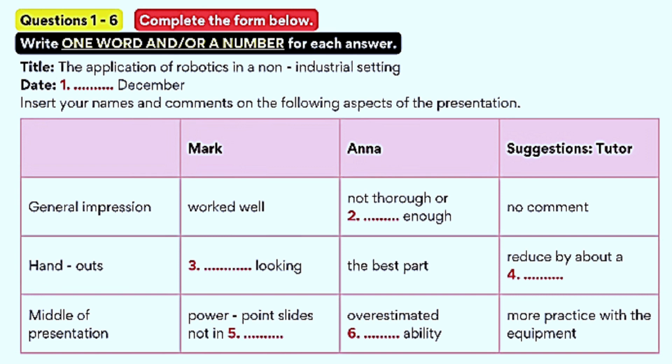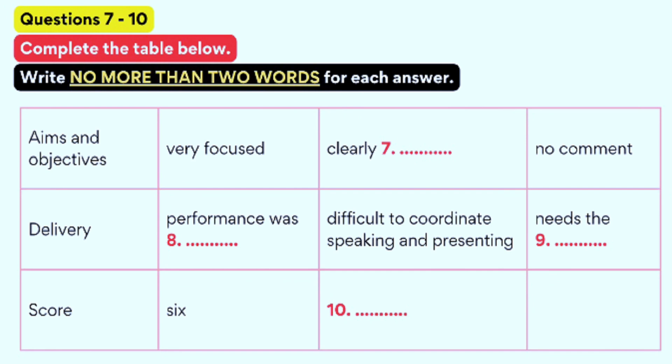Before you hear the rest of the conversation, you have some time to look at questions 7 to 10. Now listen and answer questions 7 to 10. What about the next item on the feedback form, the aims and objectives? I think they were very focused and we followed them through well, I think. We wanted to show how Europe was lagging behind other areas of the world. Yeah, I think they were clearly set out. Yes, agreed. No comment there.